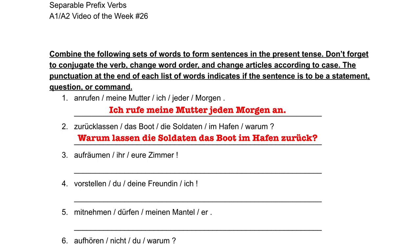The next one is a command, which is why there's an exclamation mark at the end. We have the verb aufräumen, using the ihr form command, which means we have a T ending — räumt. Auf still goes at the end of the sentence. Don't forget the ihr command form does not have the word ihr actually in the sentence. So the command form is: Räumt eure Zimmer auf — clean your rooms.